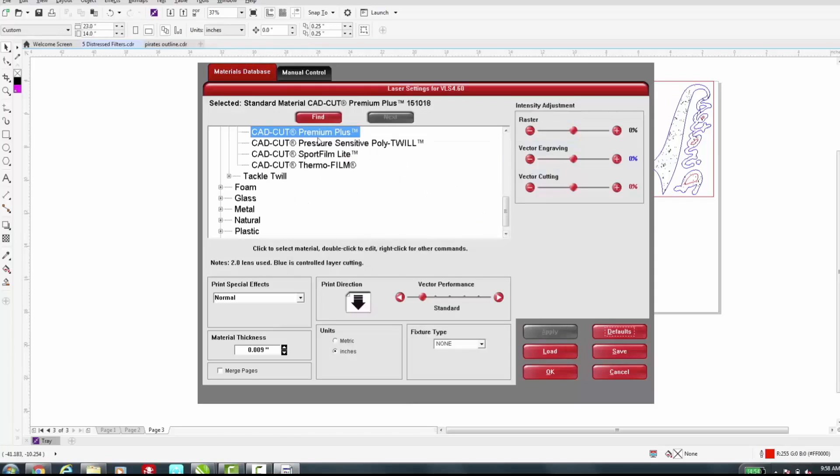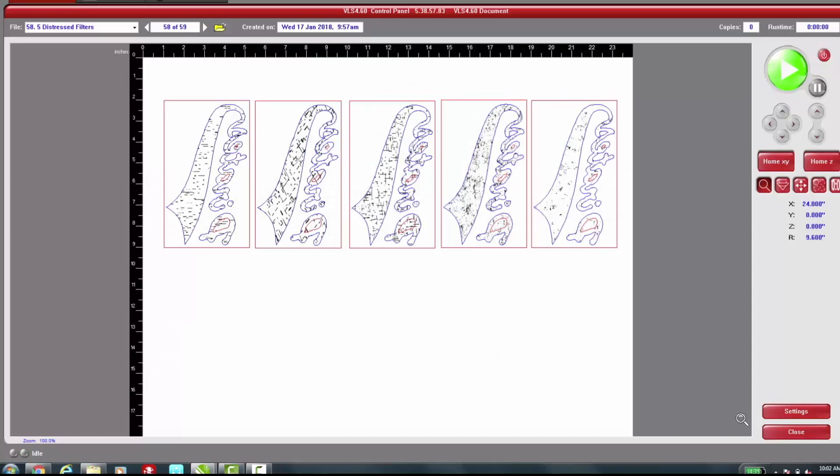Make sure we have CADCUT Premium Plus selected. That's what we're using today for a demonstration. Change our print direction, hit Apply, then OK. With the files prepared, now we can send them over to the laser.